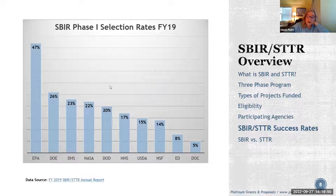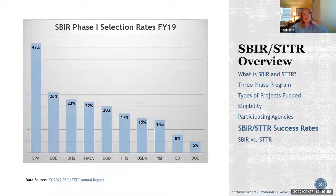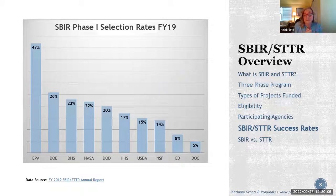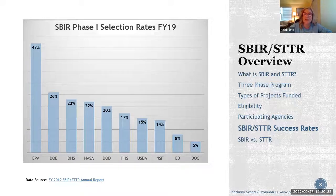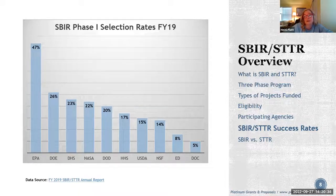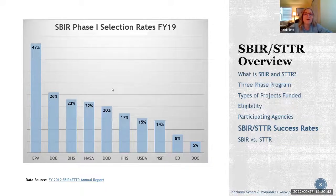This success rate data from SBIR.gov covers fiscal year 2019. I'm sharing it to give you an idea of how competitive this program is. It's great non-dilutive funding, but everyone wants to submit. Based on the table, you can see the competitiveness in the number of proposals submitted versus those actually awarded — ranging from as high as 47% for EPA to as low as 5% for the Department of Commerce.